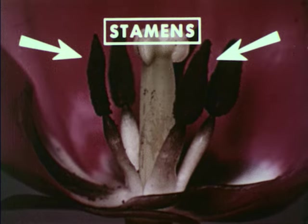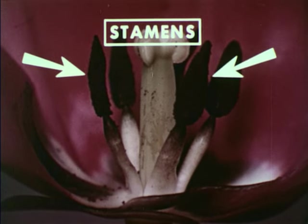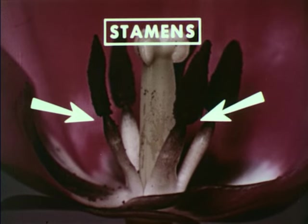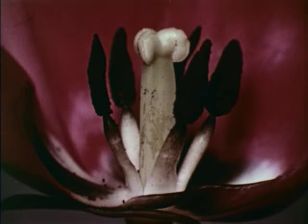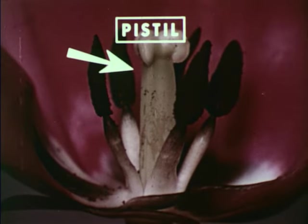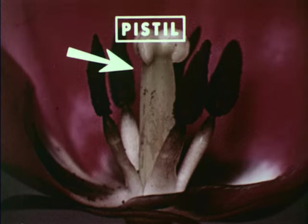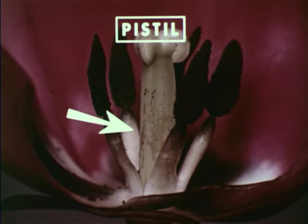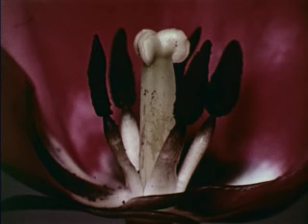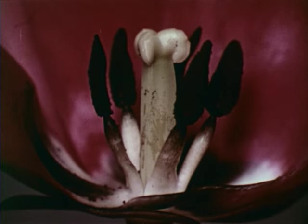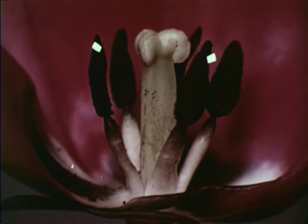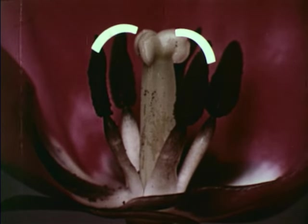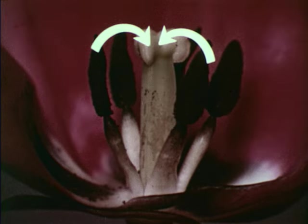These are the stamens, the male organs of the flower. This is the pistil, the female organ of the flower. Together, these are the essential parts of the flower because, in order to produce seeds, pollen from a stamen must reach the pistil.